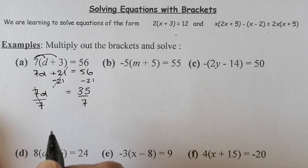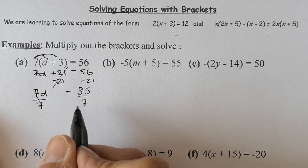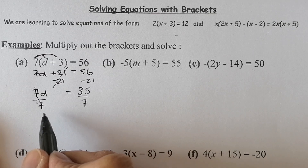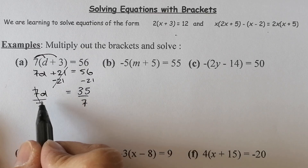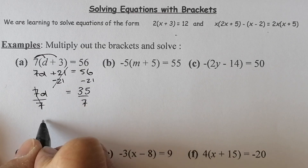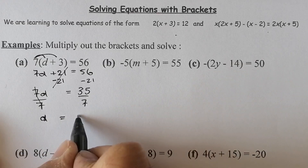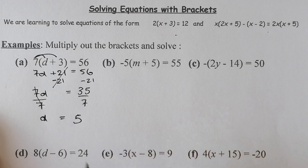Then I'll divide by 7. That cancels out the 7 and the 7 — they become 1, so 7 divided by 7 is 1, giving 1d. And 35 divided by 7 is 5. So d equals 5.